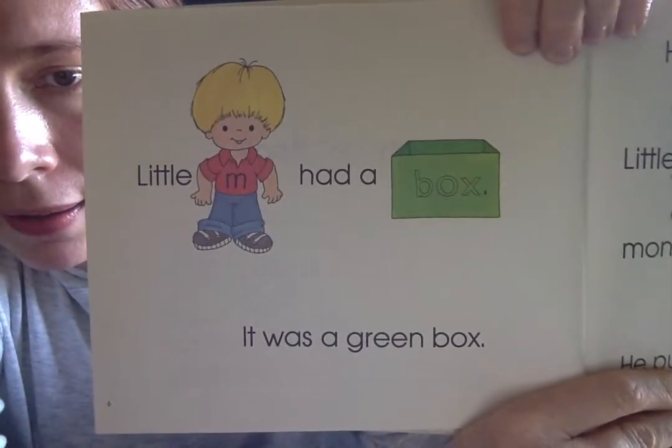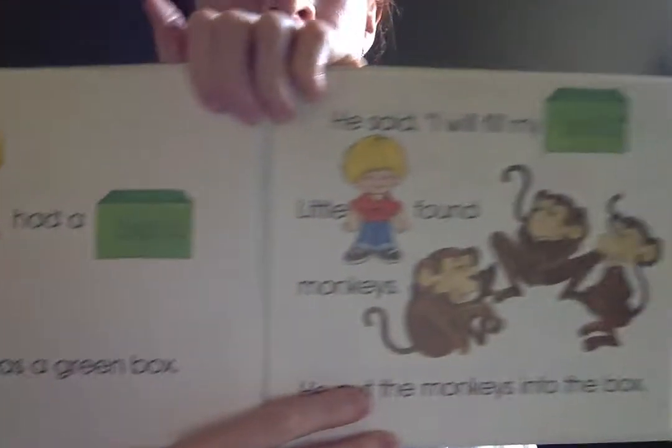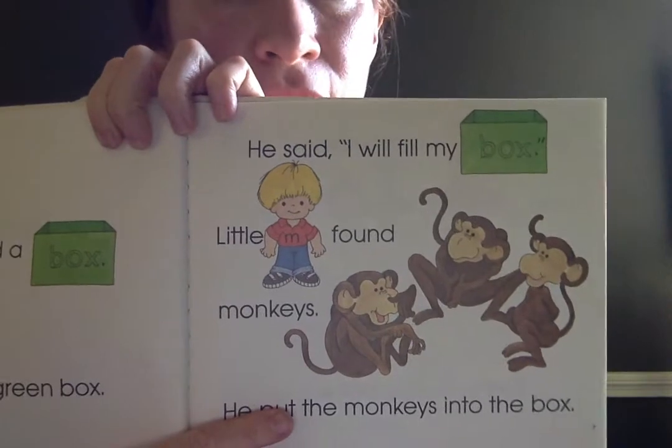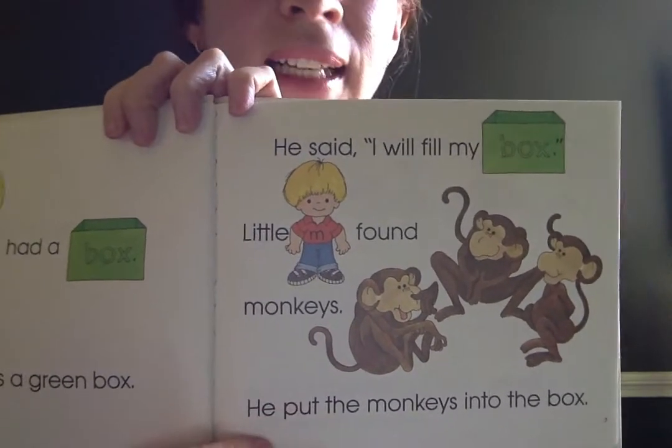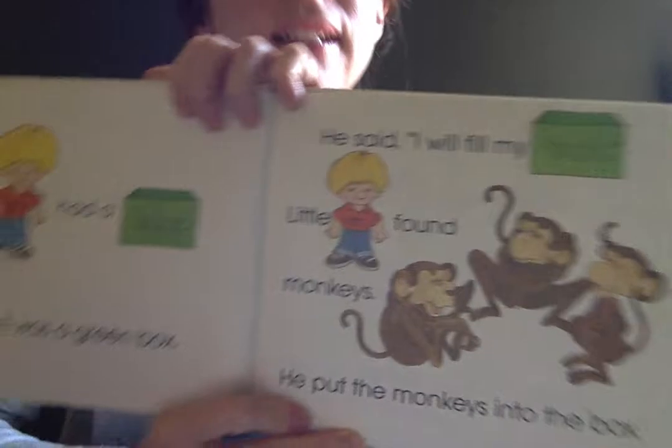Little M had a box. It was a green box. He said, I will fill my box. Little M found monkeys. He put the monkeys into the box.